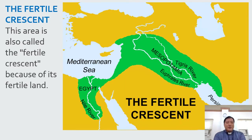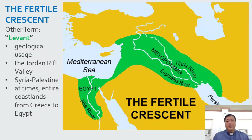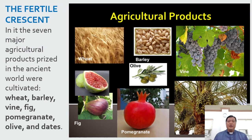The Fertile Crescent is also called that because of its fertile land. Other terms for it include: Levant — that's the geological usage — also the Jordan Rift Valley, or Syria-Palestine. At times it refers to the entire coastlands from Greece to Egypt. In it, the seven major agricultural products prized in the ancient world were cultivated: wheat, barley, vine, fig, pomegranate, olive, and dates.